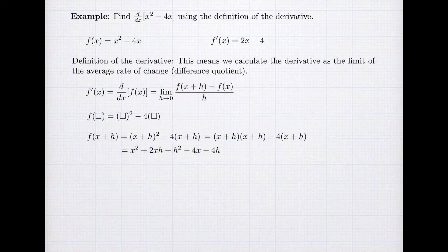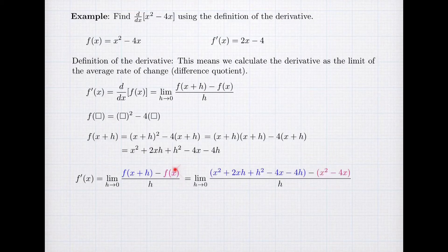All right, so now we've found f(x+h). So we're ready to use the definition of the derivative. The derivative is defined to be the limit as h goes to zero of the average rate of change. So we start by writing this down, and we're going to replace f(x+h) with its formula, and f(x) with its formula.